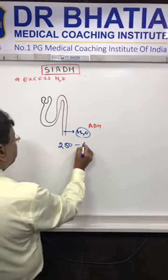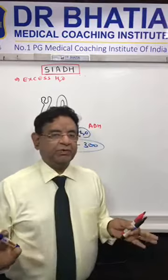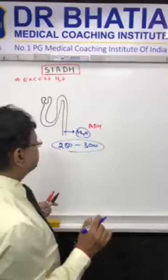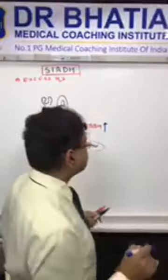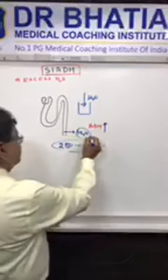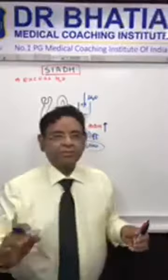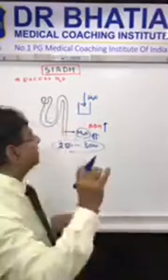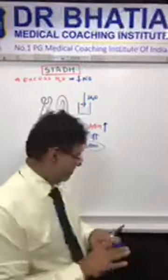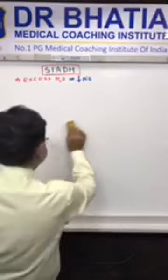ADH maintains normal plasma osmolality between 280 to 300 — it only regulates water. But in some diseases, excess ADH is secreted. As in the glass example, excess water enters, and that leads to hyponatremia. So excess ADH causes more and more water reabsorption, leading to expansion of plasma volume and ultimately hyponatremia.